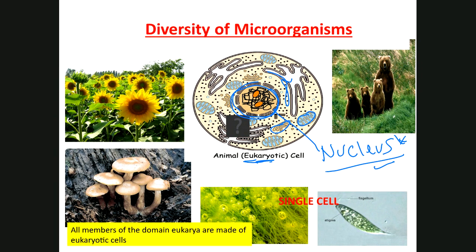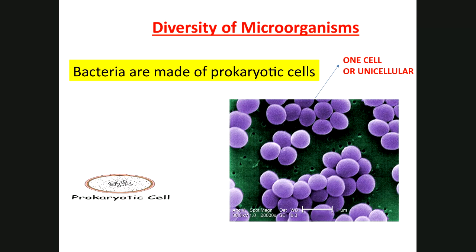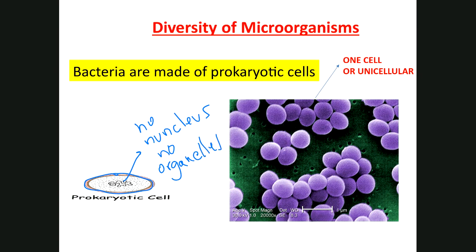A prokaryotic cell is generally smaller and has no nucleus and no organelles — it has no compartments. Everything happens in the same place: DNA, enzymes, all chemicals needed to make ATP, anabolism and catabolism all occur in one place. The DNA is in the cytoplasm in a specific region called the nucleoid. Prokaryotic cells do have ribosomes, but ribosomes are not membrane-bound organelles. Both Bacteria and Archaea have prokaryotic cells and are single-cell organisms.